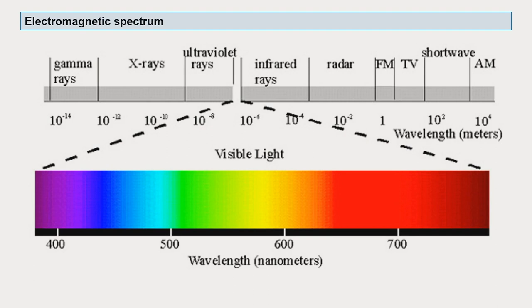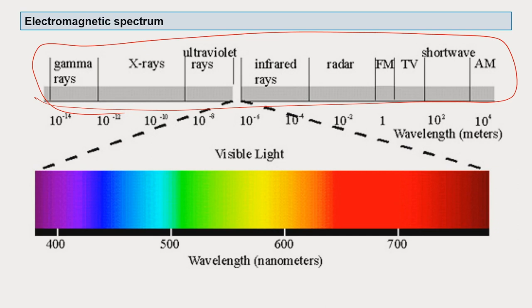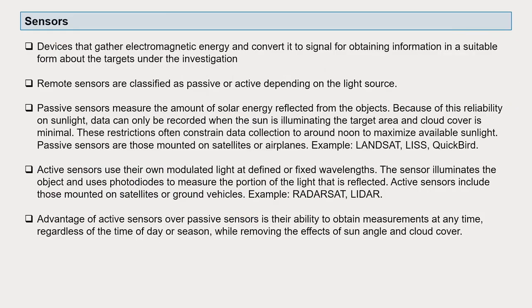All this is possible because of electromagnetic signal emission and capturing. Based on the electromagnetic spectrum, we get information through remote sensing. The visible light range signals are captured by sensors. Sensors are devices that gather electromagnetic energy and convert it to signals for obtaining information in a form we can understand. Remote sensors are classified as passive or active depending on the source of electromagnetic radiation.